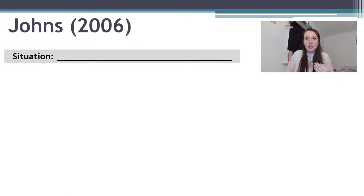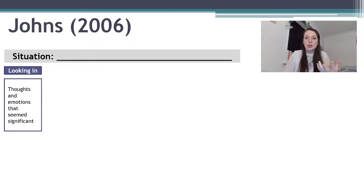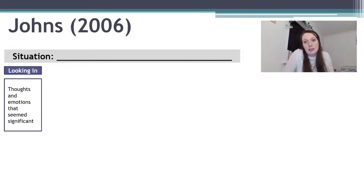With Johns, the first thing you're thinking about is: what is the situation I'm going to reflect on? It could be a clinical experience, it could be anything. Then you're thinking about looking in — the thoughts and emotions that seemed significant to you. What was most salient when you were going through that experience? Was it anxiety? Was it thinking, 'I'm not doing this right'? Or was it 'this is going really well, maybe I could ask this question'? Any thoughts and emotions that seem significant.